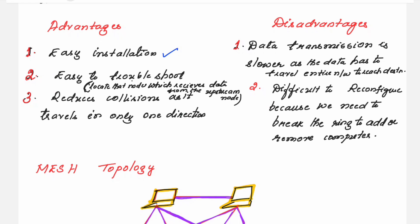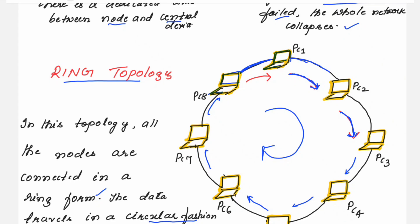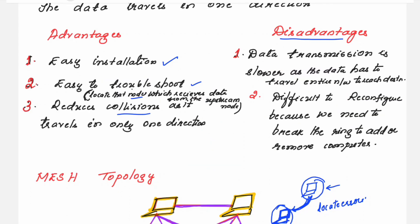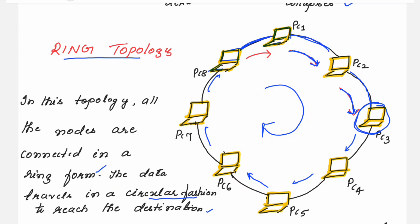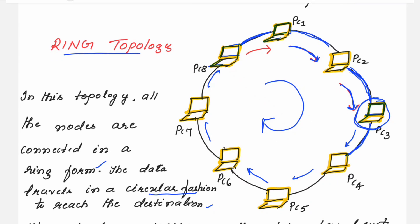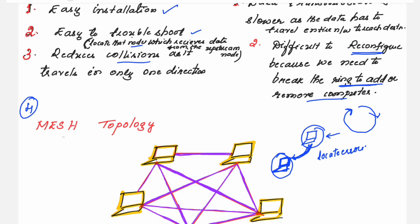The advantages of ring topology are: it is easy to install and easy to troubleshoot because you can locate the node that receives data from the upstream node. It reduces collision — in fact, no collision exists here because there is a dedicated link between every PC. The disadvantages are: data transmission is slower because the data has to travel the entire network to reach the destination. It is also difficult to reconfigure because you need to break the ring to add or remove computers — each node is connected to two other nodes, so adding or deleting a node is difficult.